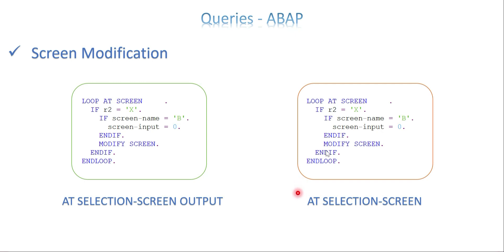When do we need AT SELECTION-SCREEN specifically for screen modifications? Suppose you have two different user commands on a screen — for example, radio buttons with user commands UC1 and UC2. Based on which user command is triggered, you want to make screen modifications. In that case, we need AT SELECTION-SCREEN.